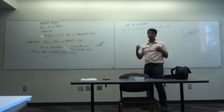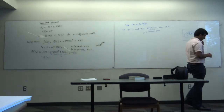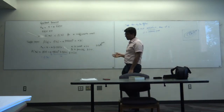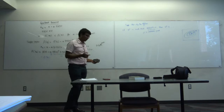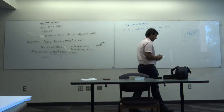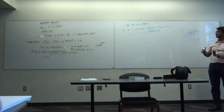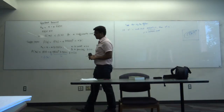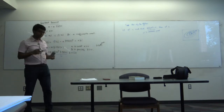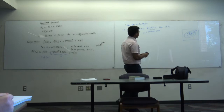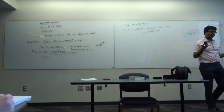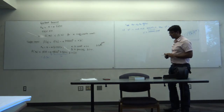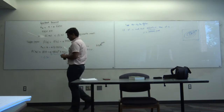For non-convex problems, gradient descent is one of the widely used methods. It converges to a stationary point, and if you want to certify that point is optimal, you need to check the second-order sufficient condition. Any questions so far?